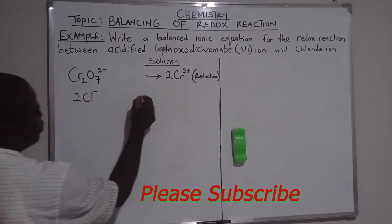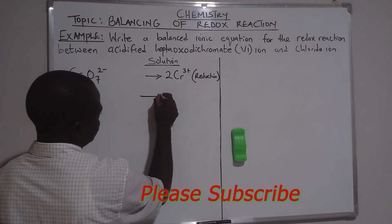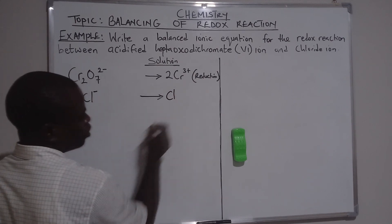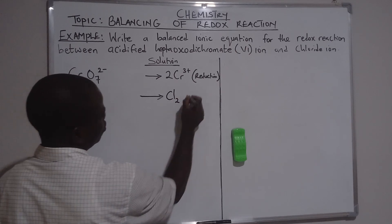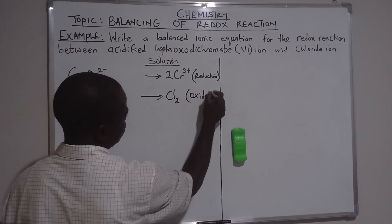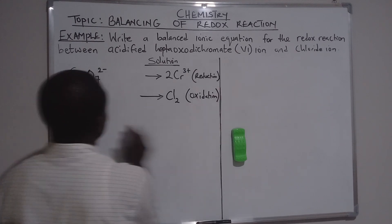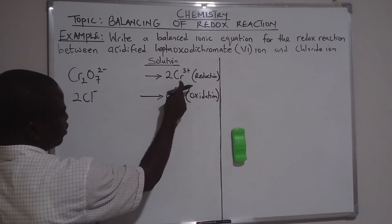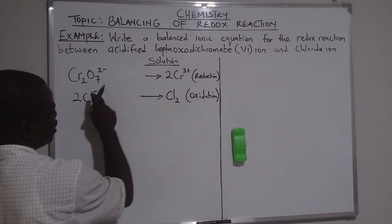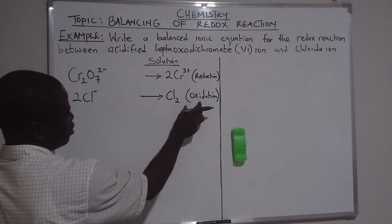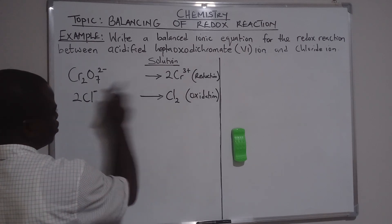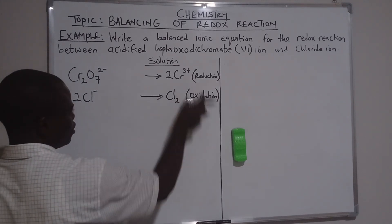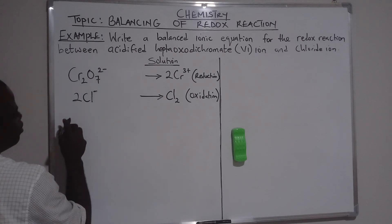The chloride ion is being oxidized to chlorine atom — this is oxidation taking place here. The charge goes from negative to zero. Zero is greater than negative, so that is oxidation. It has increased, meaning it has been oxidized.